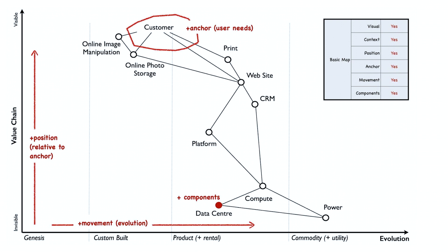The map is visual and context specific — unique to that line of business, containing the components that influence it at that moment in time. The map has an anchor, which is the customer. The position of components in the map are shown relative to that customer on the value chain represented by the vertical axis. Each component needs the component below it. The closer to the customer and the higher on the vertical axis, the more visible the component is to the customer. For example, the customer cares about online photos, which requires storage, which requires a data center and power — and the data center and power are going to be hardly visible to the customer.